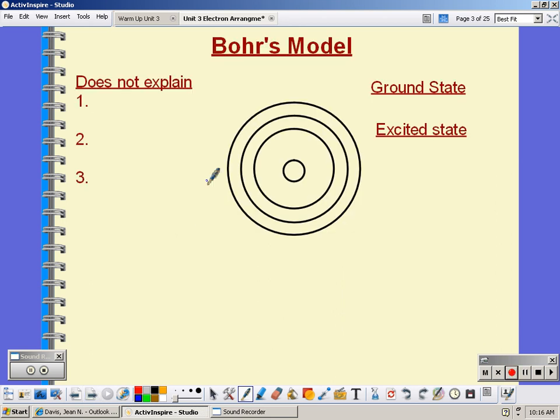Bohr's model. The ground state is the lowest energy. An excited state is simply higher energy. So our electron starts off on the ground state. If we give it a certain amount of energy, if we add more energy to that electron, it will get excited and jump up to a higher energy level.